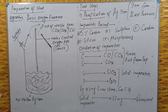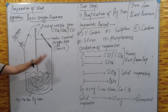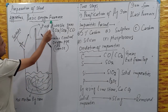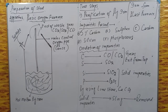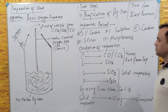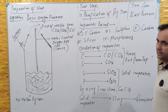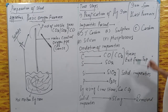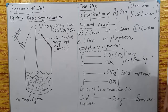In this video we will discuss the preparation of steel. There are basically two steps in the preparation of steel. The apparatus used is called the basic oxygen furnace or basic oxygen converter. The first step is the purification of pig iron — the iron obtained from the blast furnace. That iron is low quality because it has a maximum amount of impurities, so it is called pig iron.